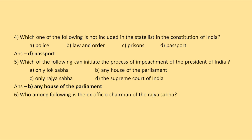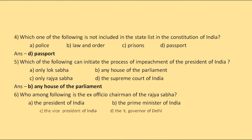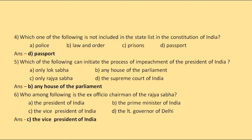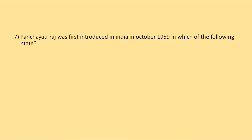Who among the following is the ex-officio chairman of the Rajya Sabha? The options are the President of India, the Prime Minister of India, the Vice President of India, or the Lieutenant Governor of Delhi. The correct answer is the Vice President of India.